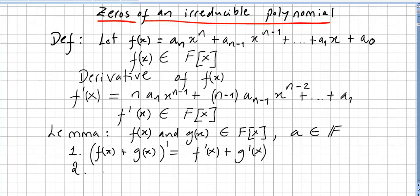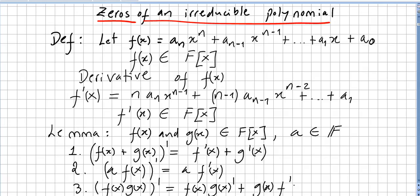Everybody's used to this from calculus. If I have a function multiplied by a scalar from the field, the derivative will be a times this. And then we have what we call in calculus the product rule: (f(x)g(x))' = f'(x)g(x) + g(x)f'(x). That's the product rule. I'm going to leave this without any proof.